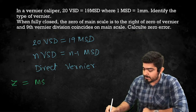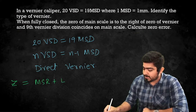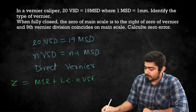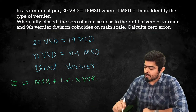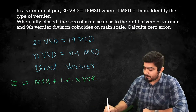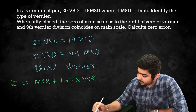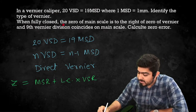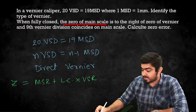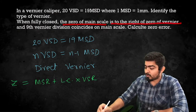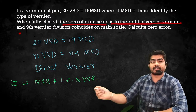For zero error calculation, the formula is: MSR + (Least Count × VSR). First, since 0 of Main Scale is to the right of the 0 of Vernier, we identify the Main Scale Reading.